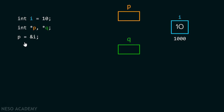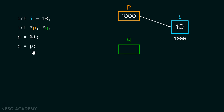Therefore, with the help of this statement, we will simply assign this address to pointer p, so that the pointer p will point to variable i. Now, with the help of this statement, we are trying to assign the content of p to q. p contains the address 1000, which is the address of variable i.